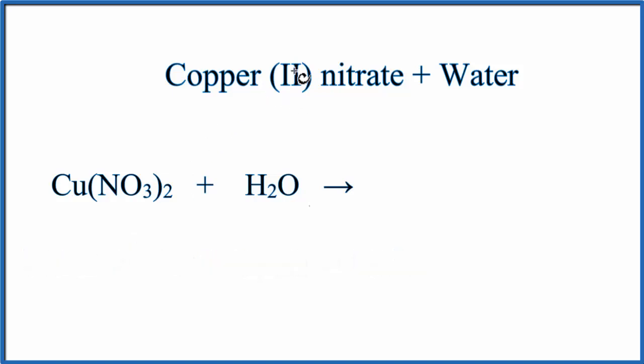So copper(II), this 2 here, tells us that it's a 2+ charge on the copper. So we'll put our 2+ up here. And then NO3, that's the nitrate ion. We looked that up on a table of common polyatomic ions. It has a 1- charge, so we'll just write a minus up here.